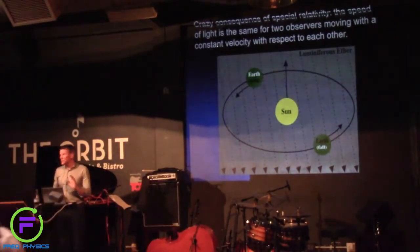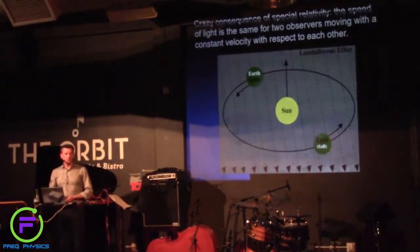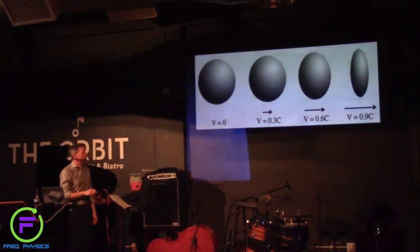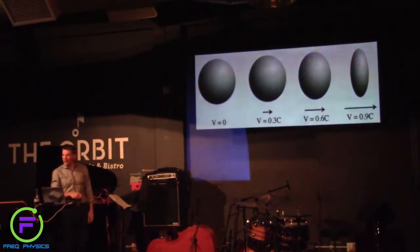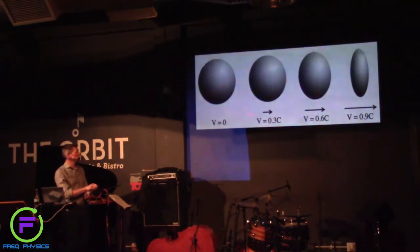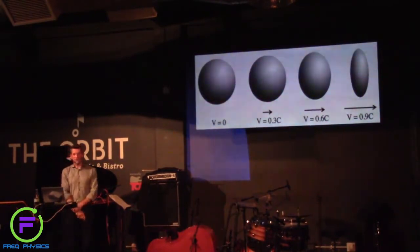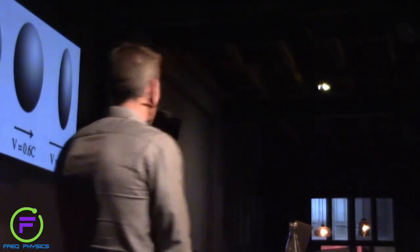The consequences of special relativity are kind of strange. For example, it predicts — and this is something one can check experimentally — that when a ball moves, it will change its shape. That's purely due to this weird equivalence principle. It's very strange, very counterintuitive, but it follows from special relativity.